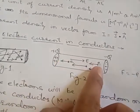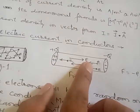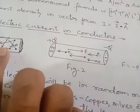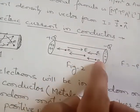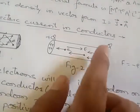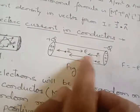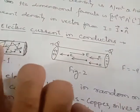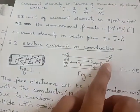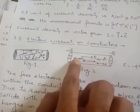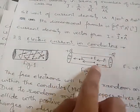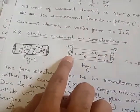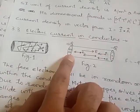The electric field direction is from positive to negative. Now the electrons are repelled from the negative charge potential. This is why electrons, which were randomly moving, now have a definite direction — from negative terminal to positive terminal — and a definite current flows.